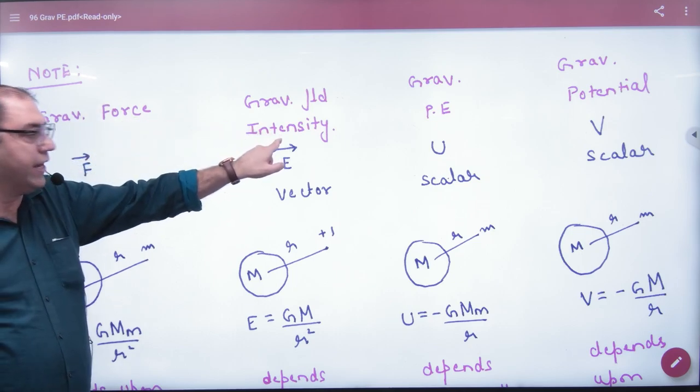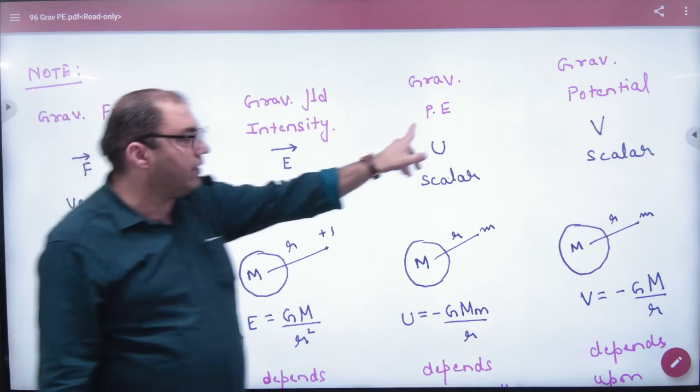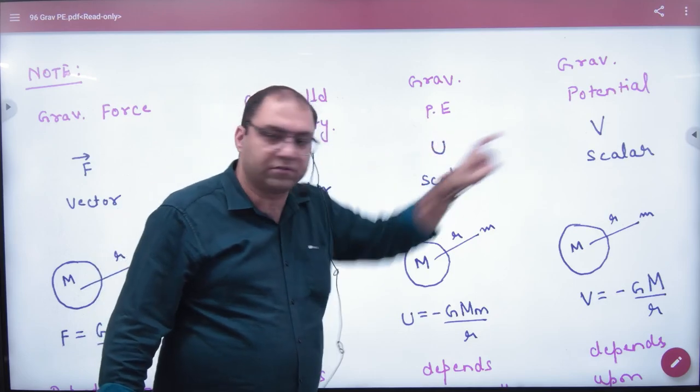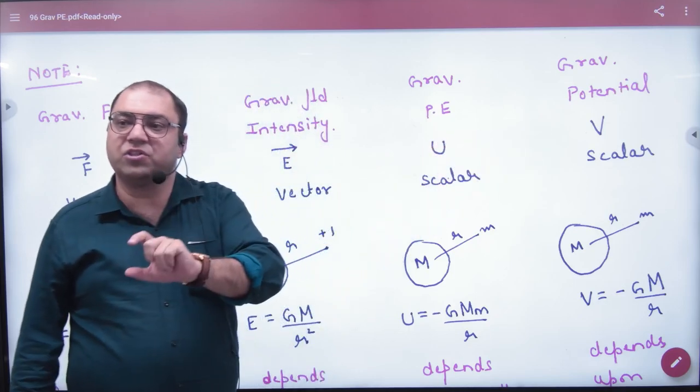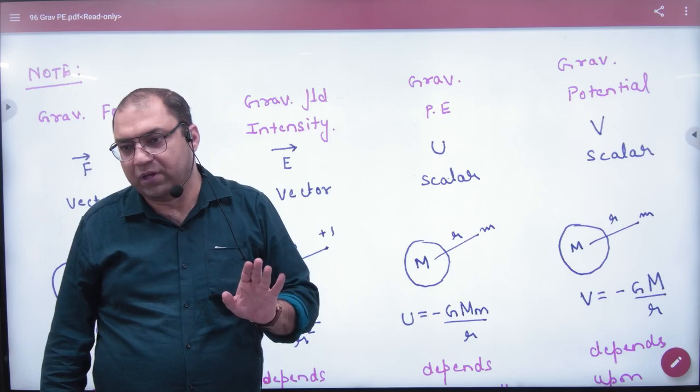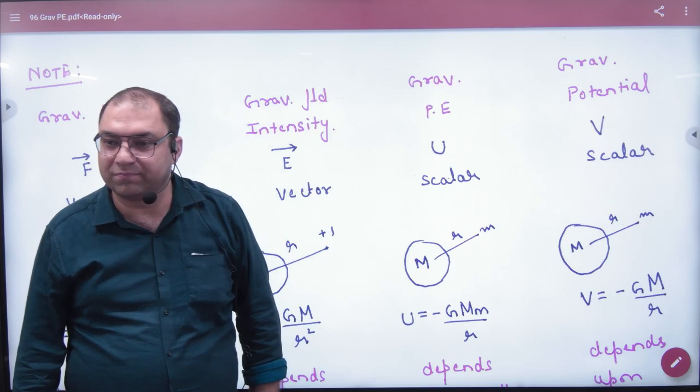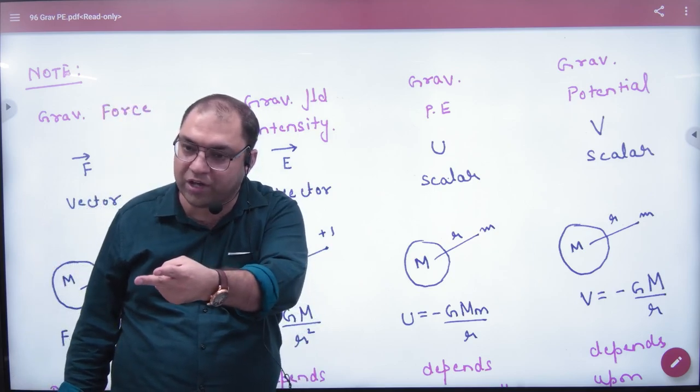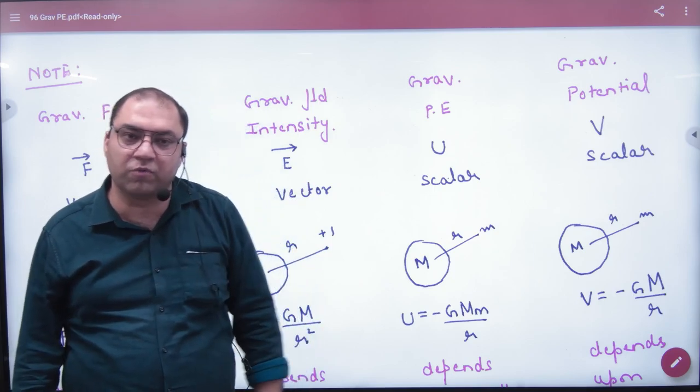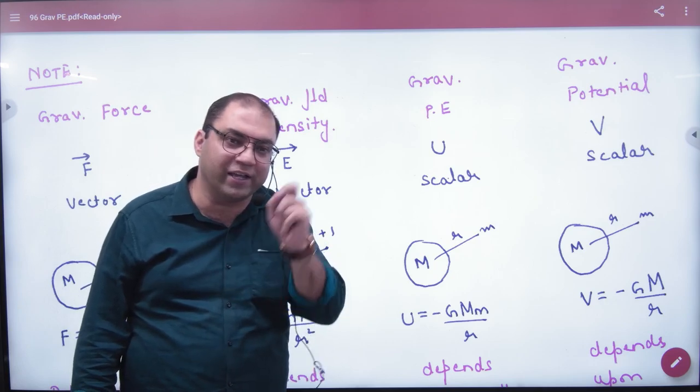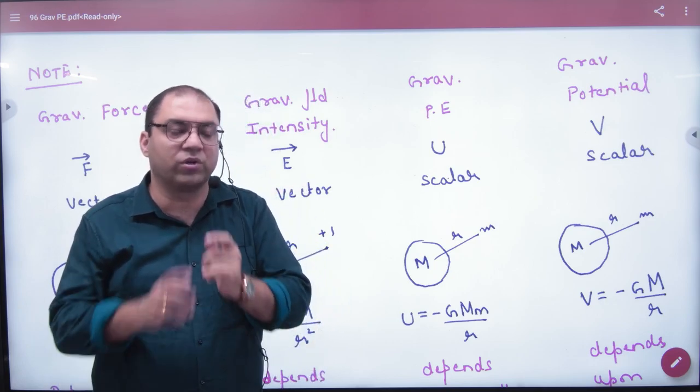Phir humne kiya ki, intensity, phir humne kiya kya, energy, and last mein, potential. Chaar chizein, ek aathi hi chalti hai, plus two ke andar, seedhe mahina lagega, in chaar chizein ko karne ke liye. Plus one mein, do lecture lagega, chaar chizein ko karne ke liye, to socho, plus two ke detail hogi. Iske reason hai.